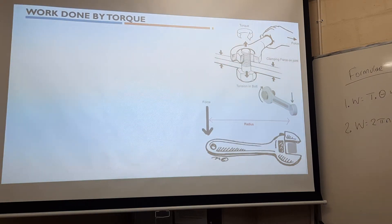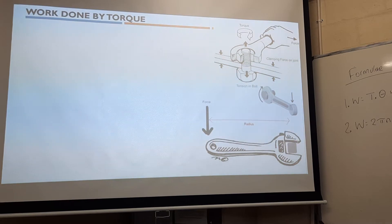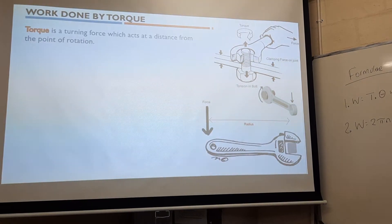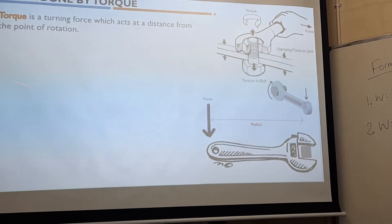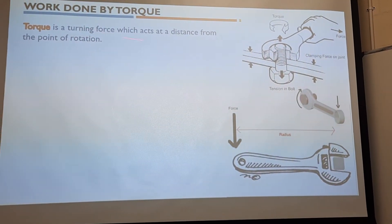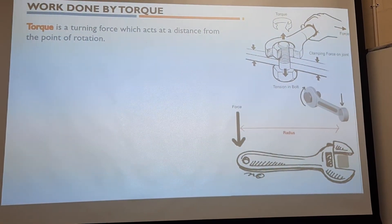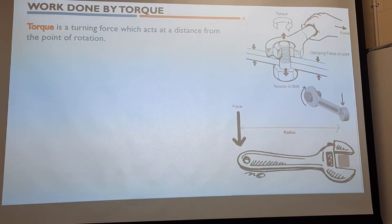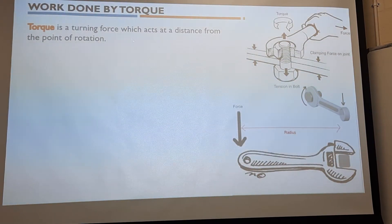Wet down by torque focuses on wet down when you have a force that causes a rotation. What is torque? Torque is a turning force which acts at a distance from the point of rotation. Or you can say torque is a twisting force. So it's similar to the concept of a moment — when the force is applied and it makes a rotation, it generates torque.